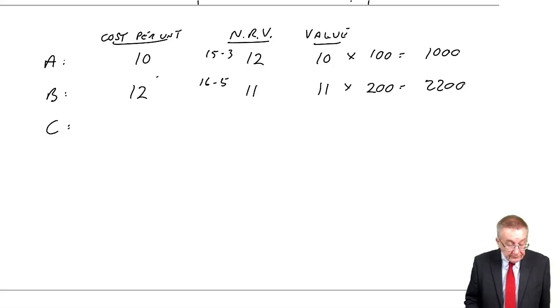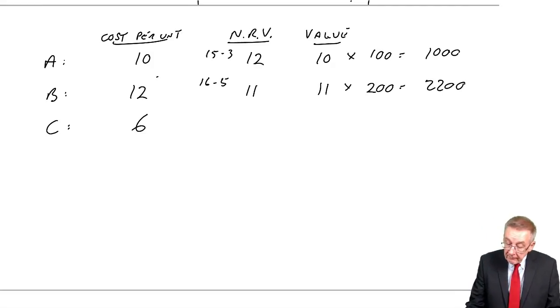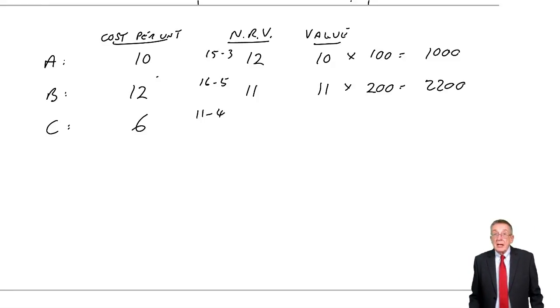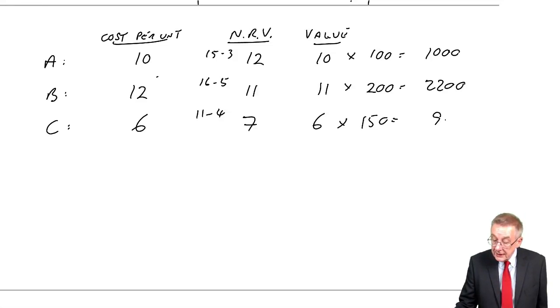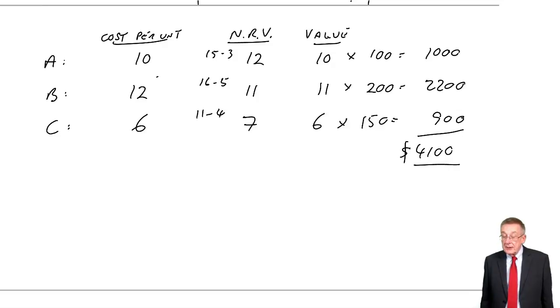And finally, there are 150 units, cost so far is $6. The net realizable value, we'll sell them for $11, but there'll be another $4 in costs before we sell them. The net realizable value is $7. Value at the lower of the two, which is $6, and 150 units, which is $900. So the total value is $4,100. That's what you do your debits and credits on.